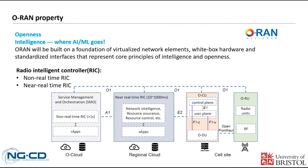O-RAN will be built on the foundations of virtualized network elements, white-box hardware, and standardized interfaces that represent core principles of intelligence and openness. There are two Radio Intelligence Controllers designed in O-RAN: non-real-time RIC and near-real-time RIC. The non-real-time RIC is used to provide services that are not sensitive to time requirements, while the near-real-time RIC can provide more swift services like network optimization, resource control, etc. Each component is connected by standard interfaces like O1, A1, and E2. Machine learning or deep learning models can be deployed into RICs through the format of microservice applications like xApps and rApps.